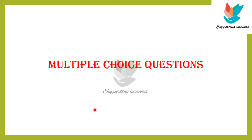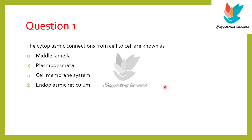Let us solve some MCQs regarding this to test whatever we have learnt. You can pause the video and write the answers in the comment section. First question: The cytoplasmic connections from cell to cell are known as — A) middle lamella, B) plasmodesmata, C) cell membrane system, and D) endoplasmic reticulum. You can pause the video, think about the answer and write the answer in the comment section.